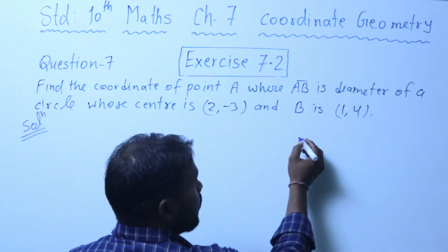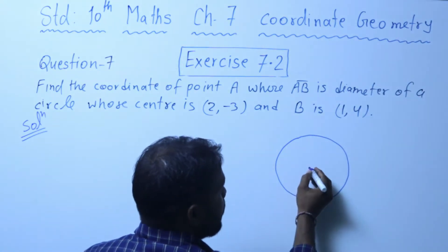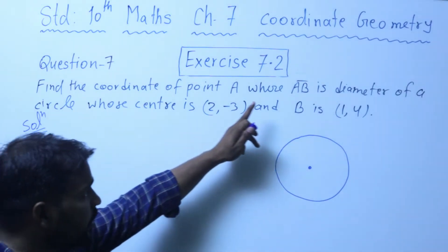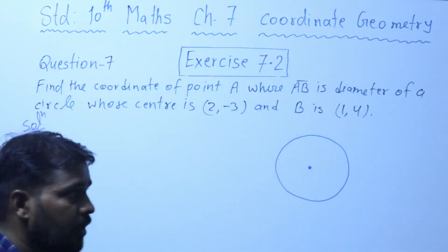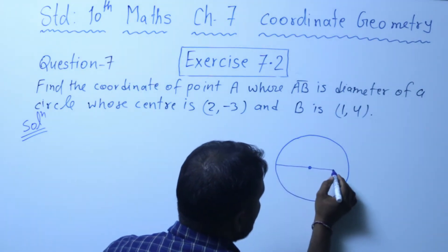Friends, we'll first draw a circle. So this is a circle. A circle will have a center. Now you're told that AB is diameter of a circle, so let's draw a diameter. This is diameter.